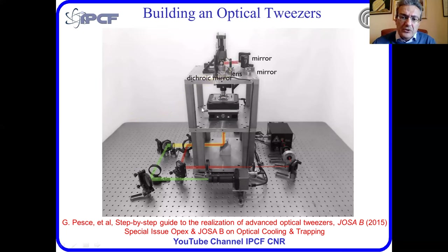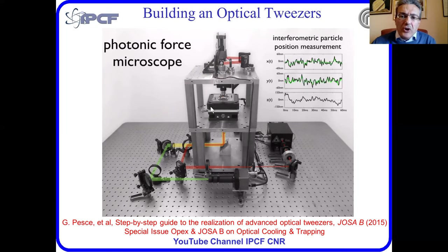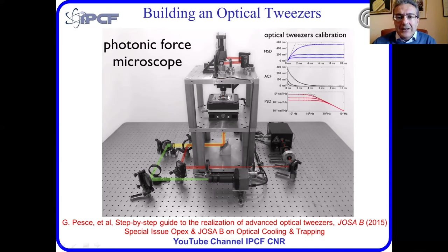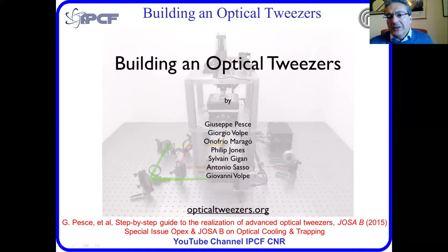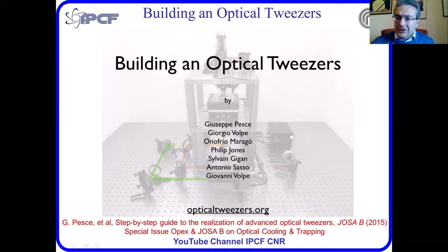Now, we also want not only to trap a particle but to measure forces. This means that we need some calibration. We collect the scattering light from the particle through the condenser lens and send it to a quadrant photodiode. The movement of the particle on the photodiode will be proportional to the Brownian motion of the particle in the trap. We use all the calibration methods that Maria Grazia Donato will explain in her lectures to do a full calibration of the optical trapping potentials.